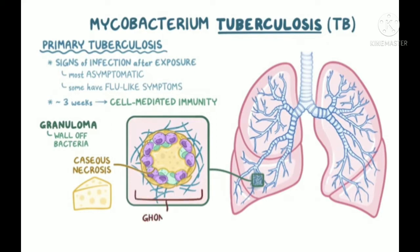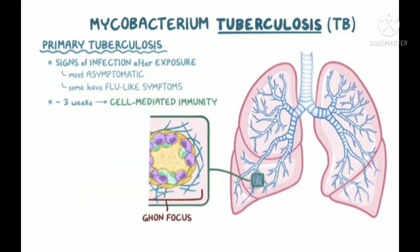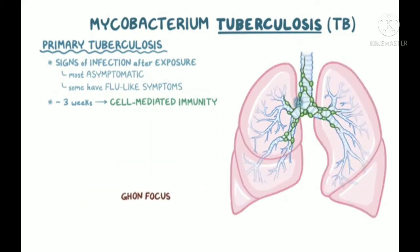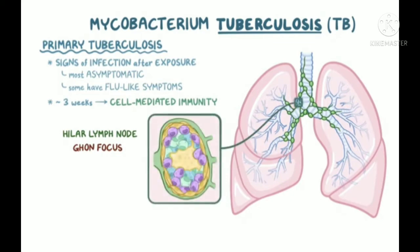This area is known as a Ghon focus. TB also gets to the hilar lymph nodes, either carried over by immune cells through the lymph or by direct extension of the Ghon focus infection, and causes caseation there as well. Together, this caseating tissue and the associated lymph node make up the characteristic Ghon complex.